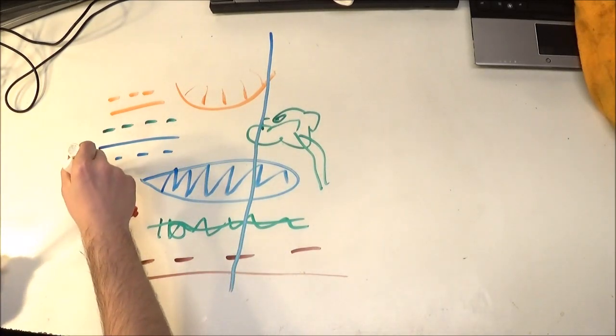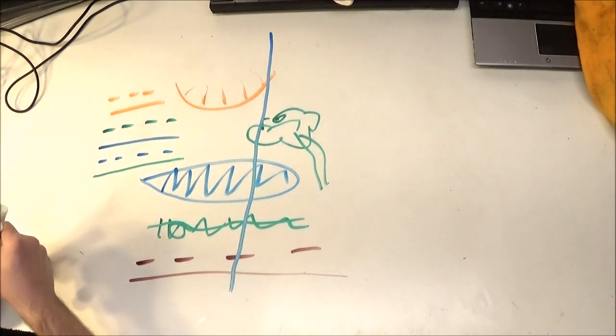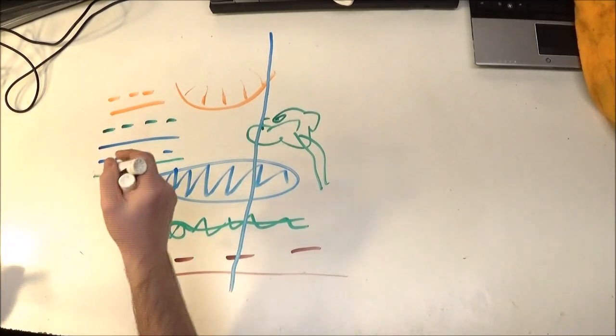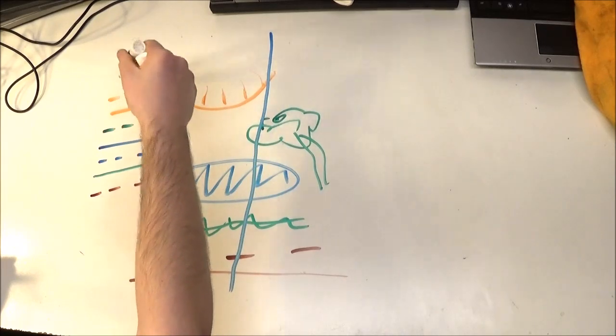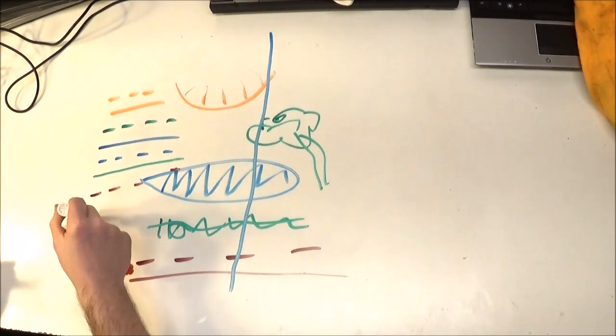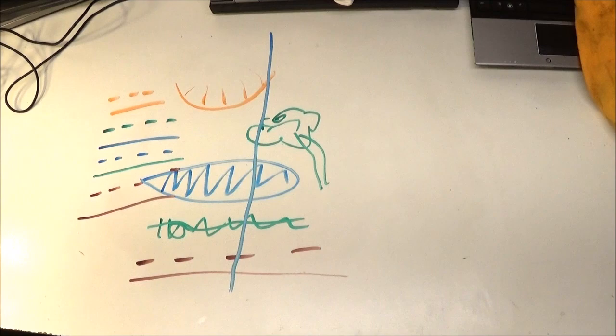Then the solid green for the seaweed—kind of ruining my drawing here. But then you've got your dashes, because it always goes dash, solid, dash, solid. And then brown for the dirt at the bottom of the lake.